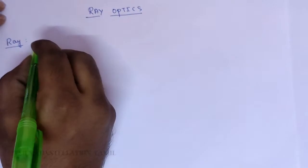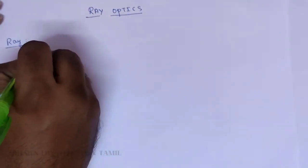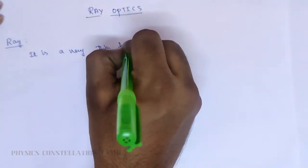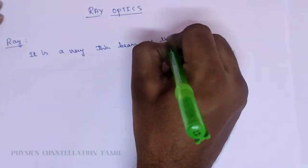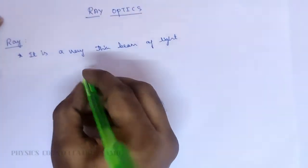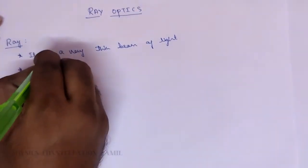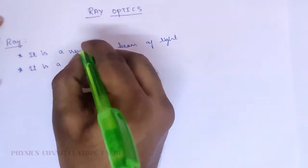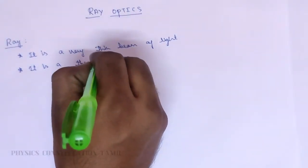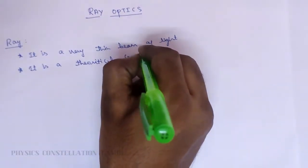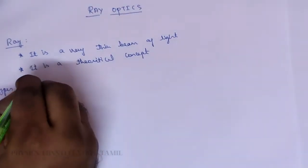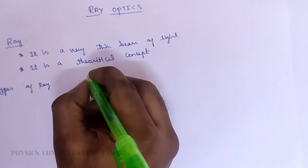A ray is a very thin beam of light. It is a very thin beam of light — a theoretical concept. So those are the types of rays.